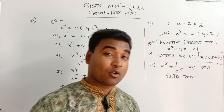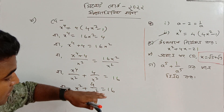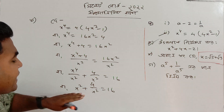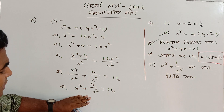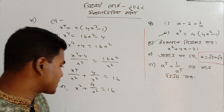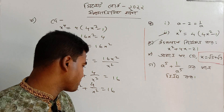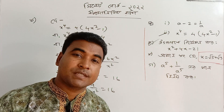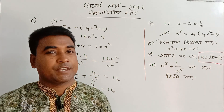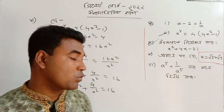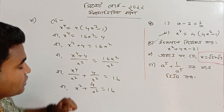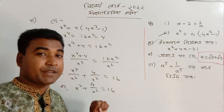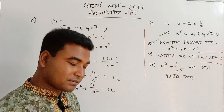So x squared plus 4 by x squared equals 16. We are going to use the identity with x plus 1 by x or x minus 1 by x, since x plus 2 by x and x minus 2 by x are the relevant terms.